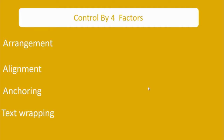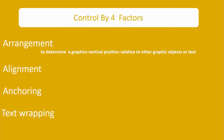Let's start with the first option: arrangement. Arrangement determines the graphic's vertical position relative to other graphics or text — whether to place a graphic above text, below text, above another graphic, or below another graphic. All these factors are decided by the property 'arrangement'. You can find all these options in two places: under the Format menu, and also by right-clicking a graphic.